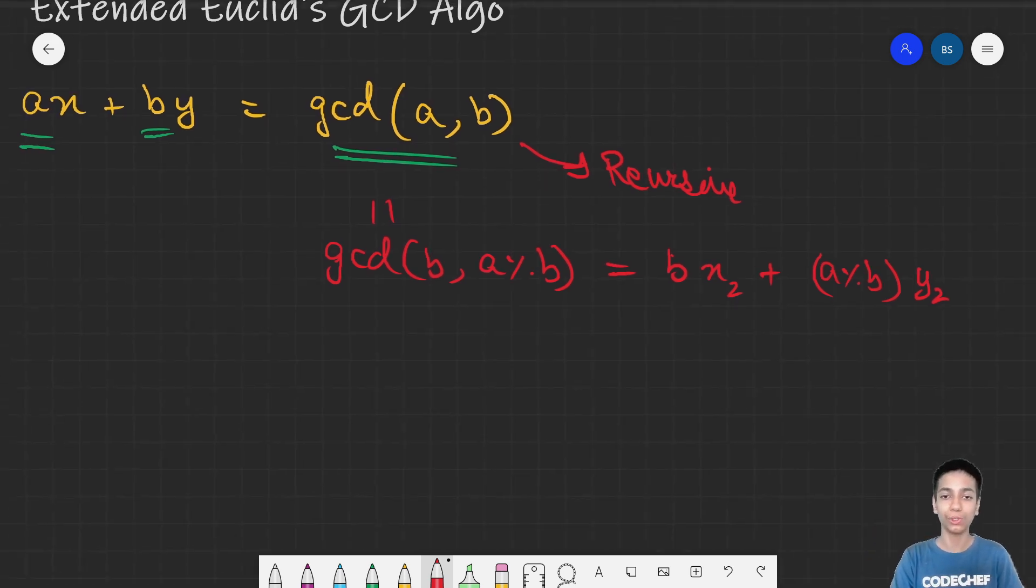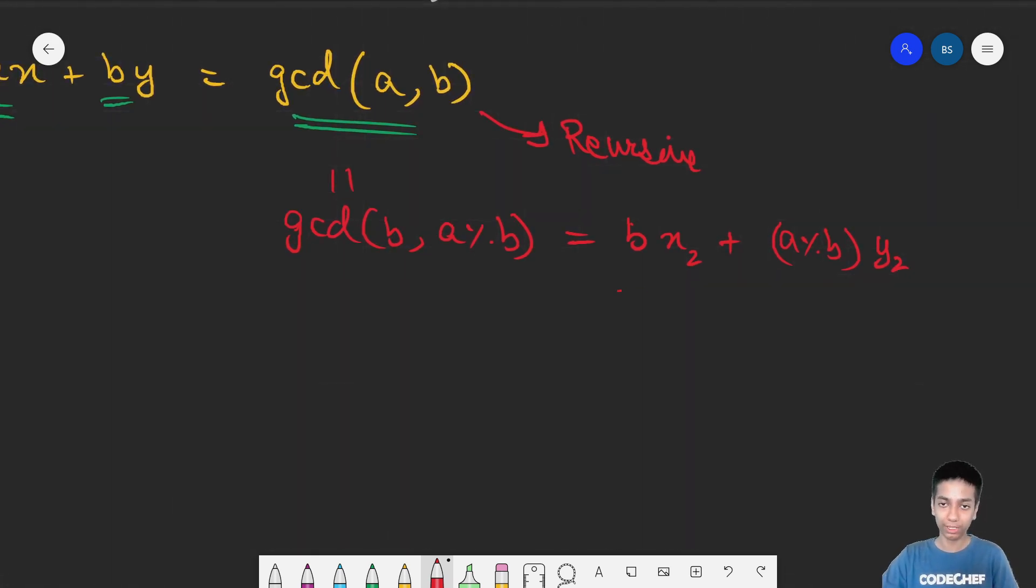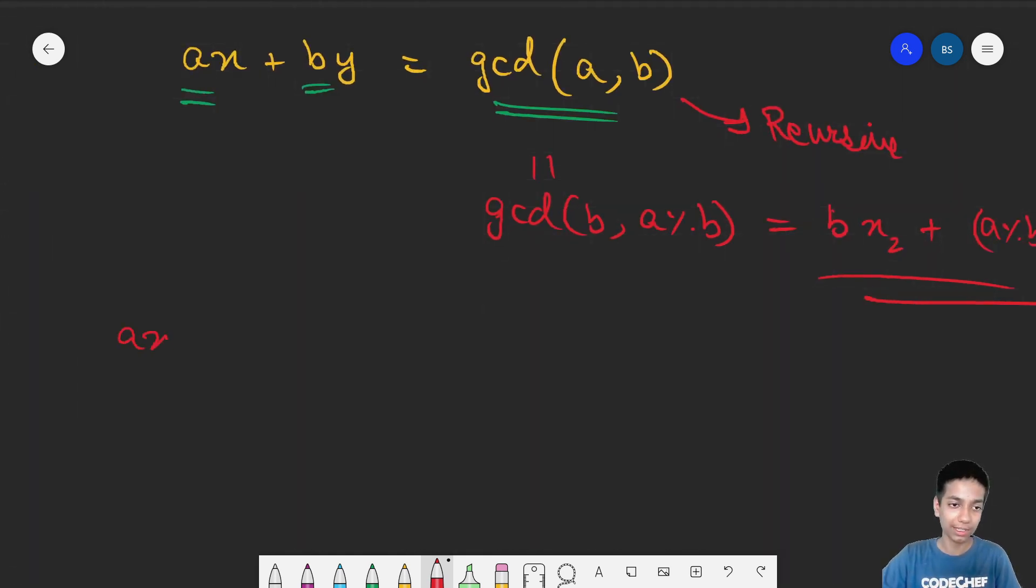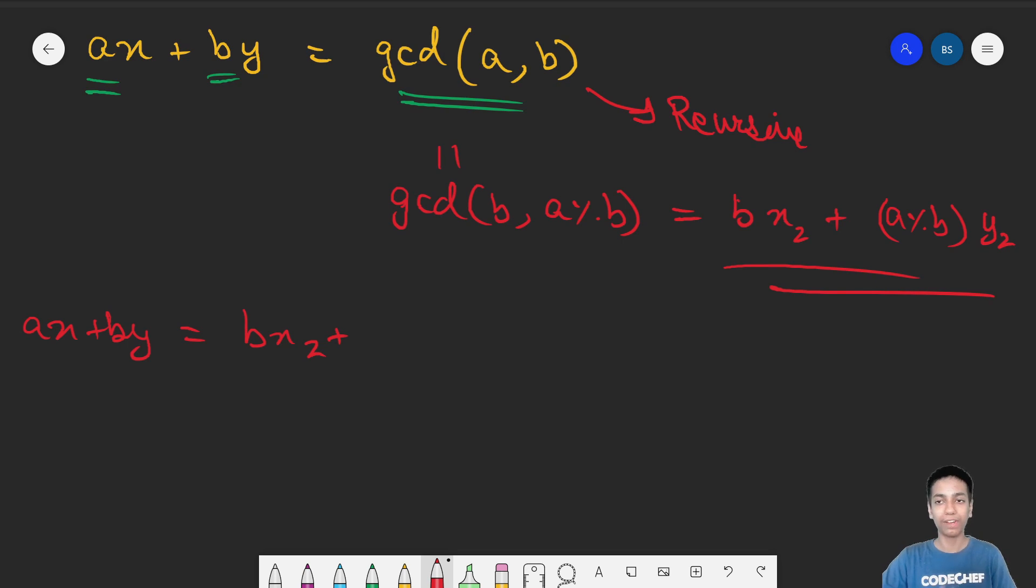Here we have an equation. We can write that AX plus BY is nothing but BX2. X2 and Y2 are something we can find recursively. Using them, we are trying to build X and Y plus A mod B times Y2.